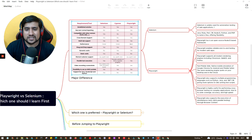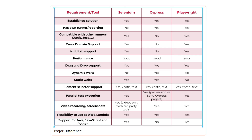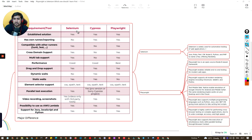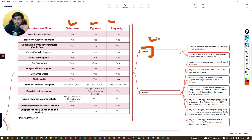First, let's look at the major differences. There's an important diagram comparing Selenium, Cypress, and Playwright. I've already explained the difference between Selenium and Cypress in a previous video — I'll put a link in the description. Selenium is basically a suite containing different tools like an IDE, a library that allows you to automate your browsers, and it also contains Selenium Grid.